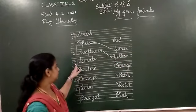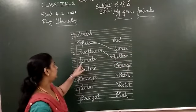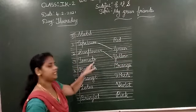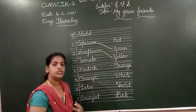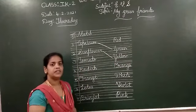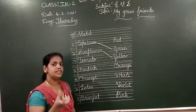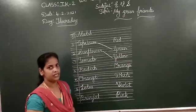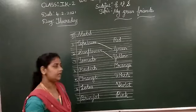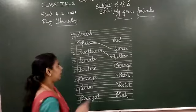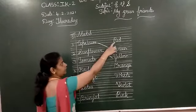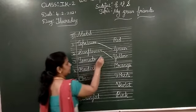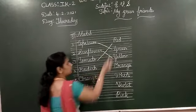Third one. T-O-M-A-T-O. Tomato. Tomato is in which color? Red color. Tomato is red color. R-E-D. Red. So match tomato to red.